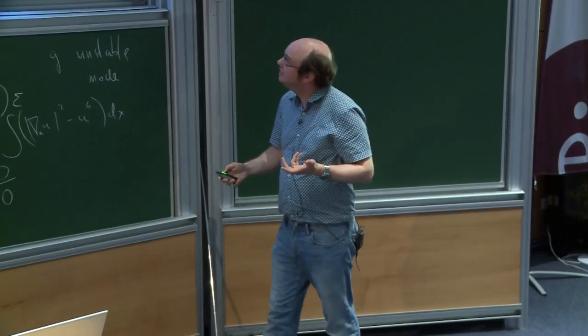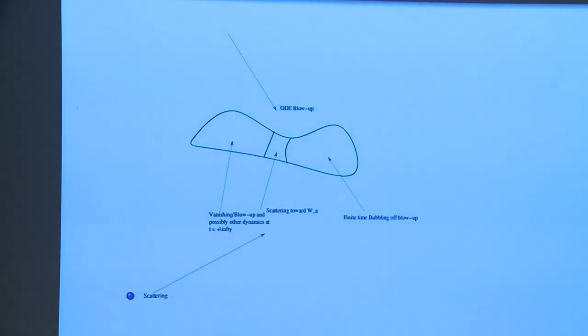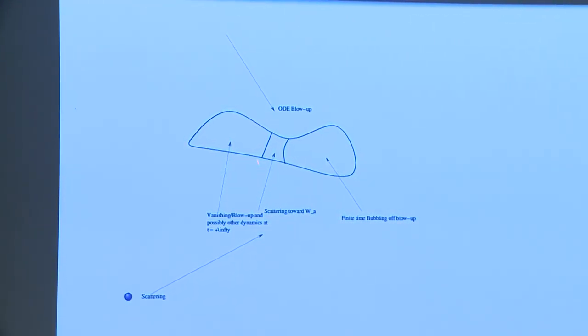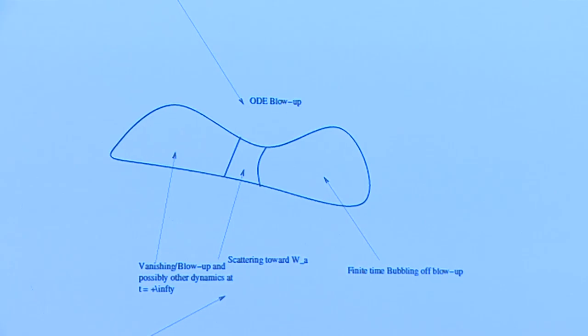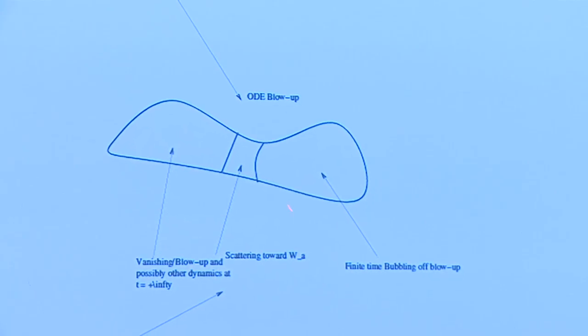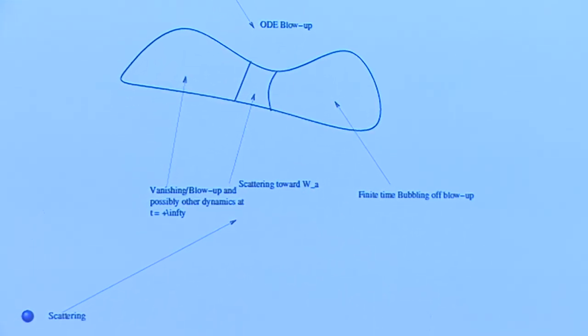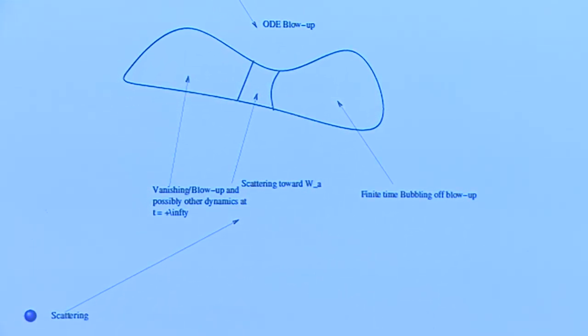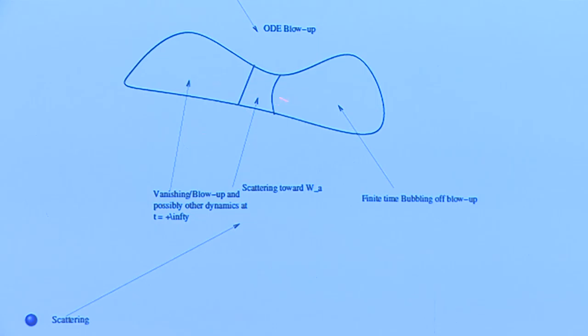This is the question I want to address. If you take one of these type 2 solutions, construct this co-dimension one hypersurface passing through its data — this hypersurface is stable under the flow, you get type 2 dynamics on it, and below/above you get scattering or blow-up. The question is: if you take your type 2 solution and perturb it along this hypersurface, what does this type 2 solution do?